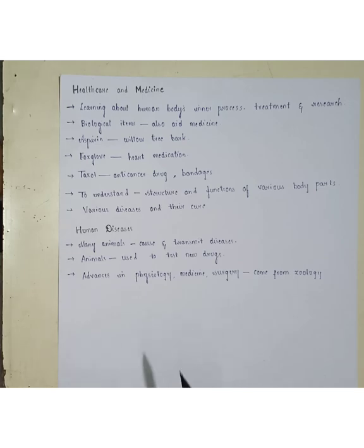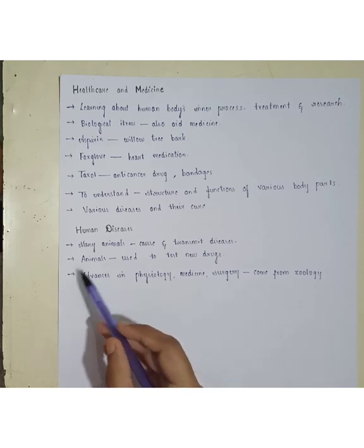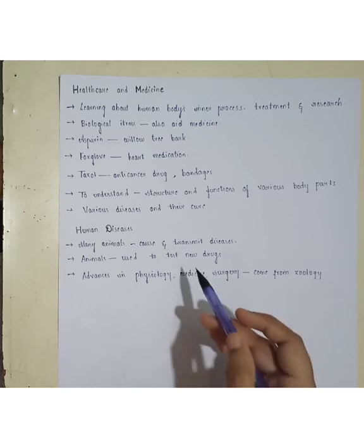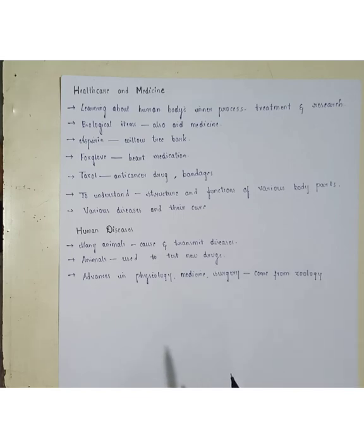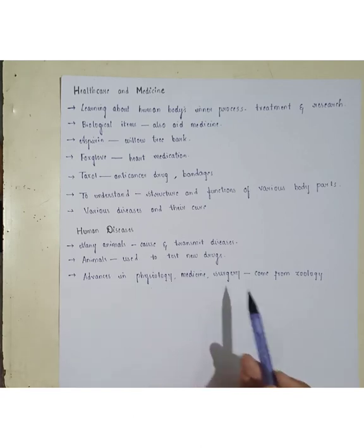Many animals cause and transmit diseases — not only microorganisms — such as food-contaminated diseases, water-contaminated diseases, and airborne diseases. By studying the animals responsible for those diseases, we can control them and protect ourselves. Animals are also used to test new drugs — vaccines are first tested on animals such as mice, and if successful, those drugs can then be used on humans. Advances in physiology, medicine, and surgery come from zoology — the study of animals — which allows us to advance in physiology, which is the functioning of the body.